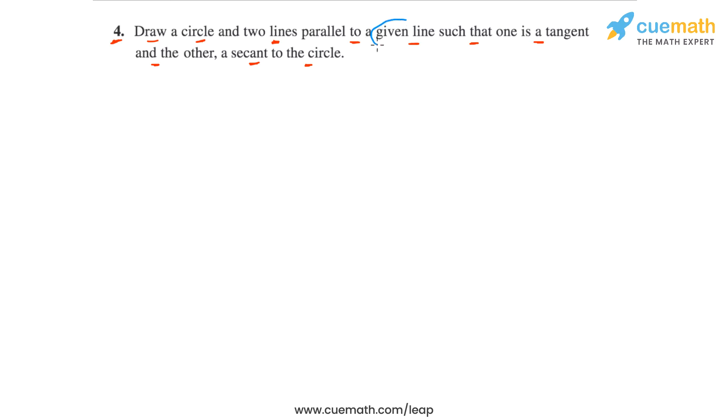So basically we have a given line. Let's say this line here, line L, is the line given to us. Now we have to draw a circle and two lines parallel to this line L such that one of the lines is a tangent to the circle and the other is a secant to the circle.